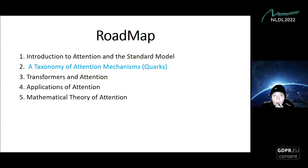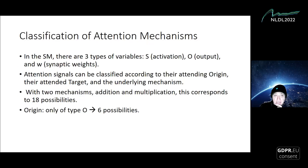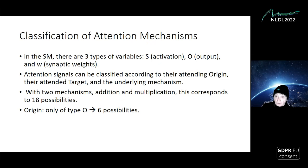Let's try to organize the fundamental building blocks of attention mechanisms. In the standard model there are three types of variables: the activations of neurons (S), the outputs of neurons (O), and the synaptic weights (W). I'm going to classify all possible attention signals according to their origin — which could be activations, outputs, or synaptic weights — and then the target could also be of type S, O, or W. I'm going to stick to homogeneous cases where the source is one type and the target is another.